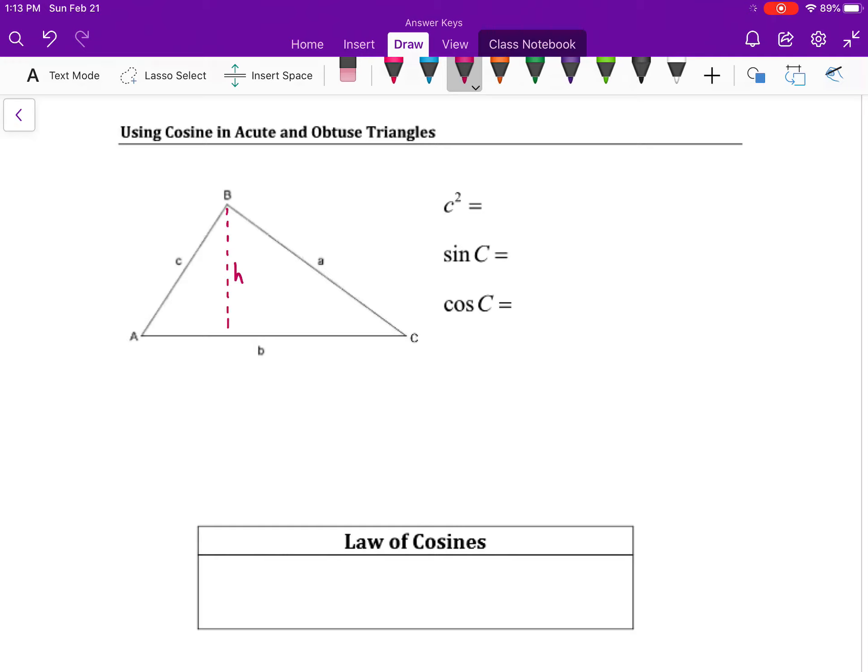So we're going to define a new variable. We're going to define the distance from that intersection of the base and the height to point C, and we're going to label that as X. And that means from A to that same intersection, instead of picking a new variable, we're going to refer to that as B minus X, since we already know that B is the length of the entire base.